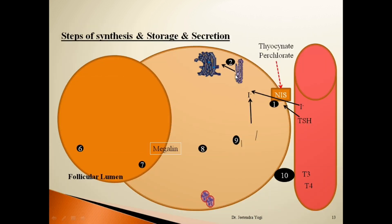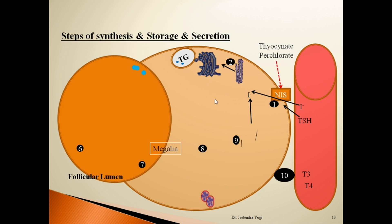So that completes step 2 — on the Golgi apparatus, the thyroglobulin molecule is synthesized, stored in vesicles within the follicular cell, and then moves into the follicular lumen. That is the second stage: synthesis and secretion of thyroglobulin. Now we come to the third stage — oxidation of iodide.